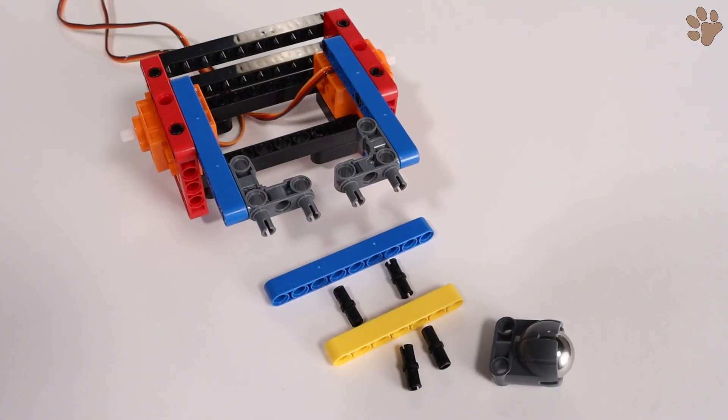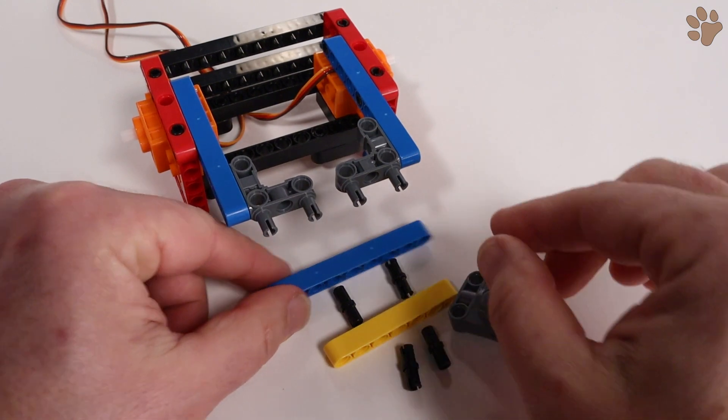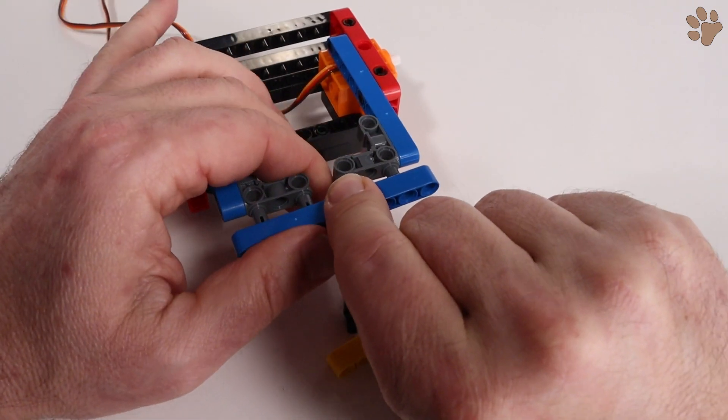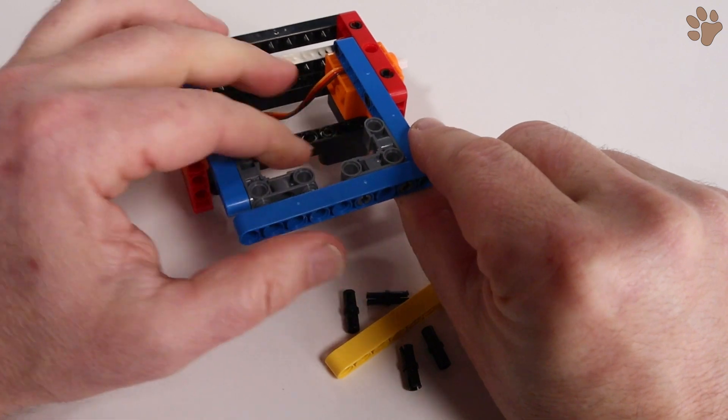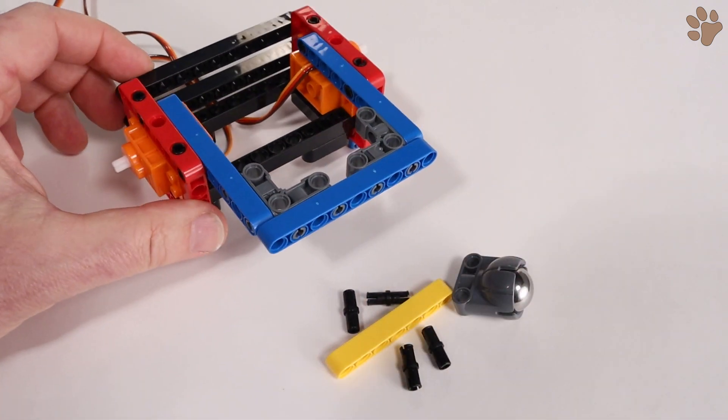There are two more beams to attach, each using two pins, and then we can add the caster wheel. Add the third blue beam to the 90 degree connectors by pressing in place.